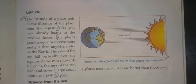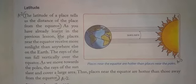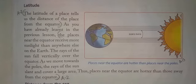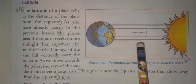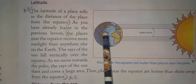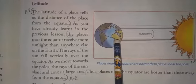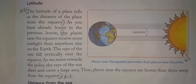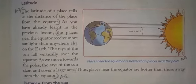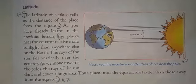The latitude of a place determines the climate of a place — it tells us the distance of a place from the equator. Places near the equator receive more sunlight than anywhere else on Earth, because the rays of the Sun fall vertically over the equator. If you look at the picture, the rays of the Sun are falling vertically over the equator at noon time, and when the Sun is vertically over our head, we feel very hot.